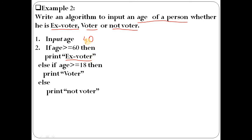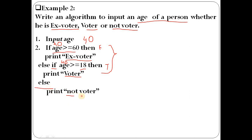Since the first condition is false, we go to the else part. We check if the person is a voter or not using an else-if condition. The second condition checks if age is greater than 18 — since 40 is greater than 18, that condition is true. However, since both conditions are evaluated together, we move to the appropriate case. When neither condition is matched, we go to the else part — that person is a non-voter.